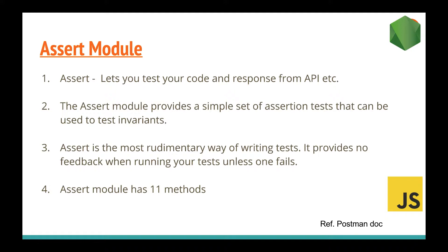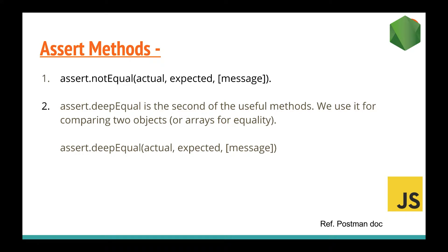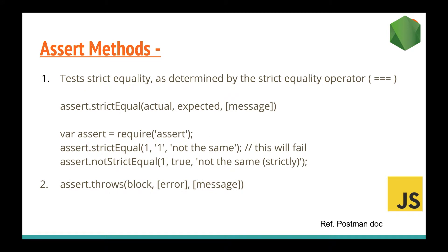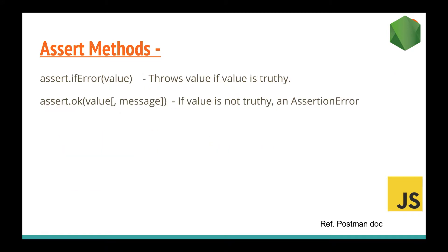Basically, the assert module provides a simple set of assertion tests that can be used to test your invariants. As you can see, it generally contains 11 methods and we are going to discuss some of them. The first method is assert itself. There are also methods like assert.notEqual, assert.deepEqual, assert.fail, and assert.equal, which we will discuss further in the demo part.